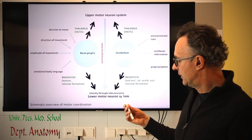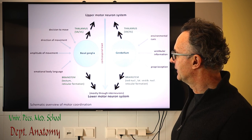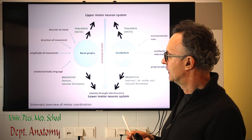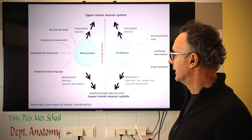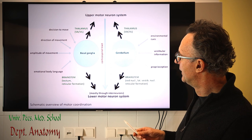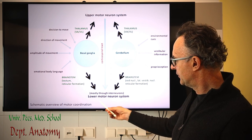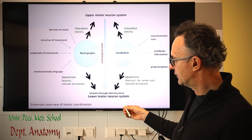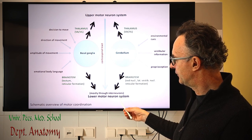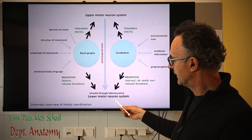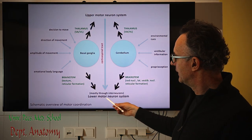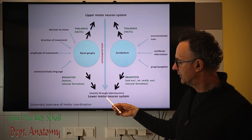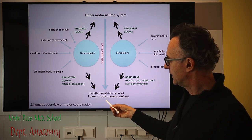First I'd like to highlight a very important schematic drawing which tries to explain the functional correlations between the pyramidal and extrapyramidal systems. The lower motor neurons are those A-alpha and A-gamma motor neurons which directly innervate the extrafusal and intrafusal skeletal muscle fibers. These lower motor neurons can be located either in the spinal cord ventral horn or in the brainstem.